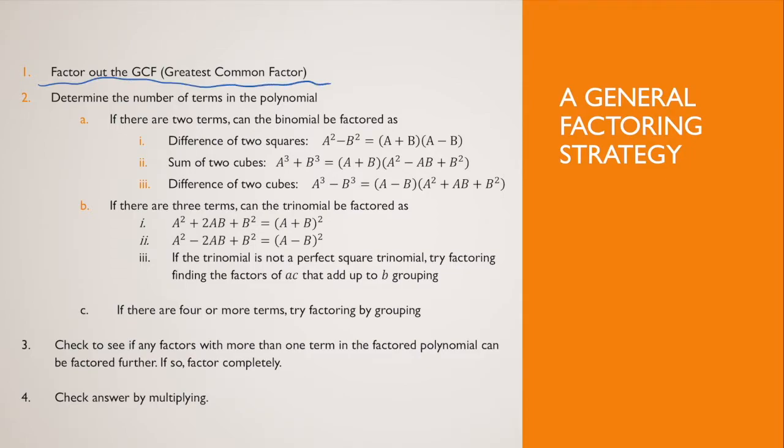The first thing you're always going to want to do is factor out the GCF. Then you need to determine the number of terms. If there are two terms, it could possibly be a difference of two squares, or it could be a sum of two cubes or a difference of two cubes.